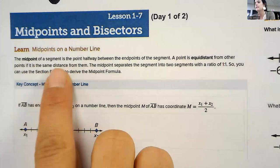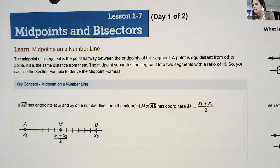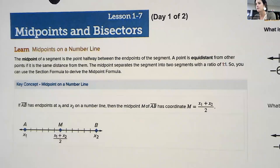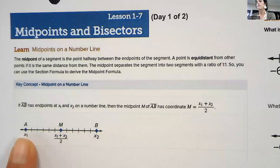So midpoints is a middle point. The midpoint of a segment is a point halfway between the endpoints of the segment. A point is equidistant from other points if it's the same distance from them. So the midpoint separates the segment into two segments with a ratio of one to one. So it's going to be two equal parts here.